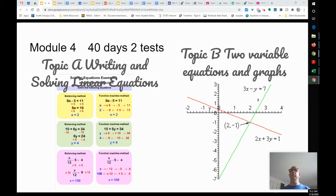Module four is 40 days, two tests. It's really long. We're going to write and solve linear equations. And look at the word linear. The word line is in there. That means it's a straight line. So like our ratio equations, this is a linear equation. It's a straight line, but it doesn't have to start at zero.